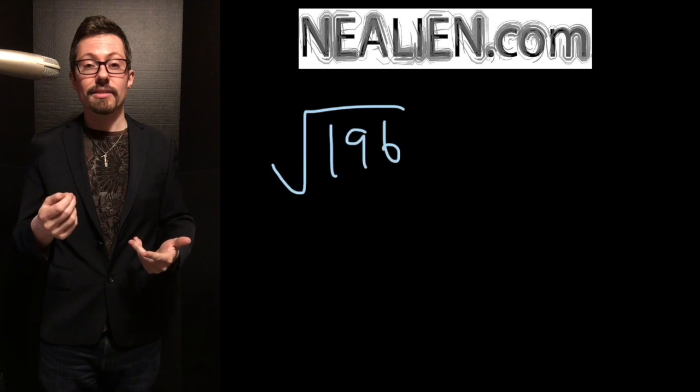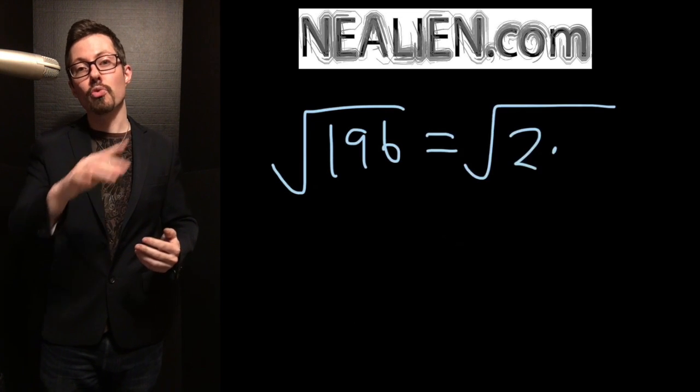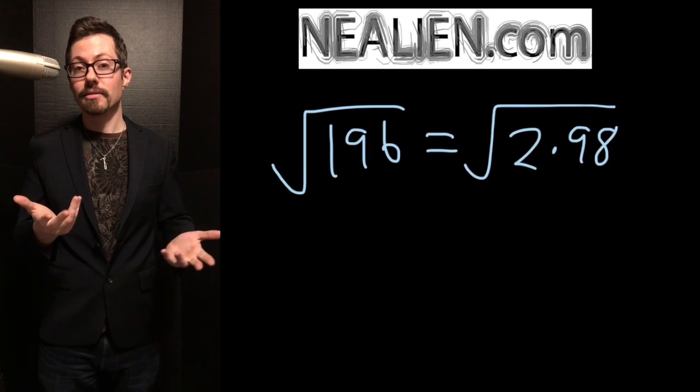For 196, you know that's an even number, so you can divide it by 2. Within the radical sign, divide 196 by 2. You're gonna get 98.